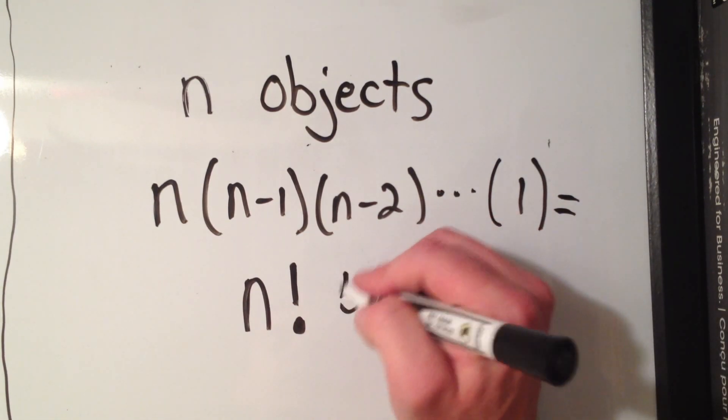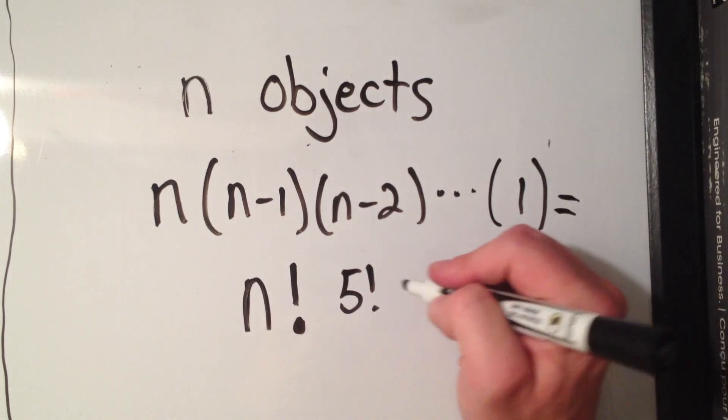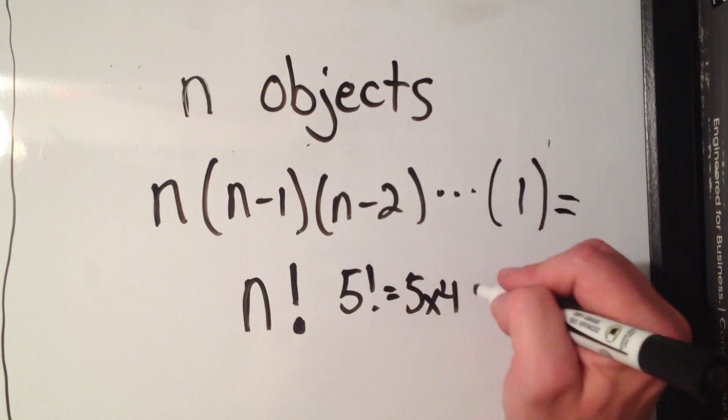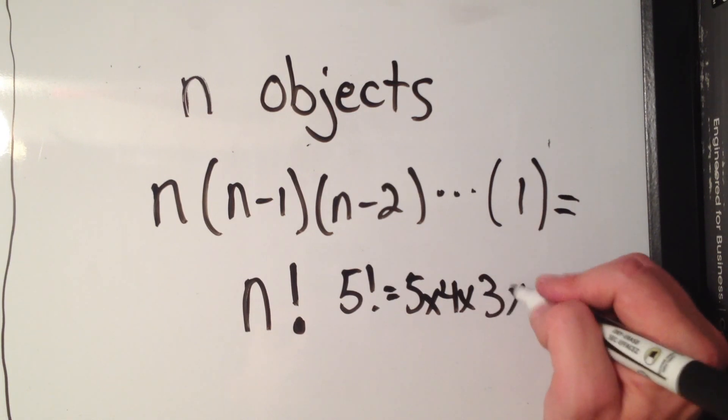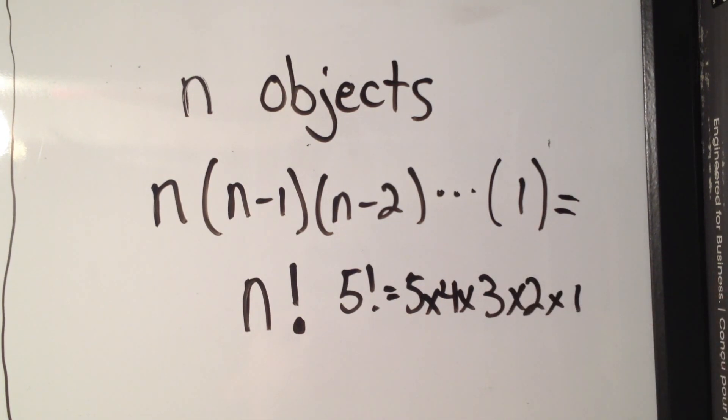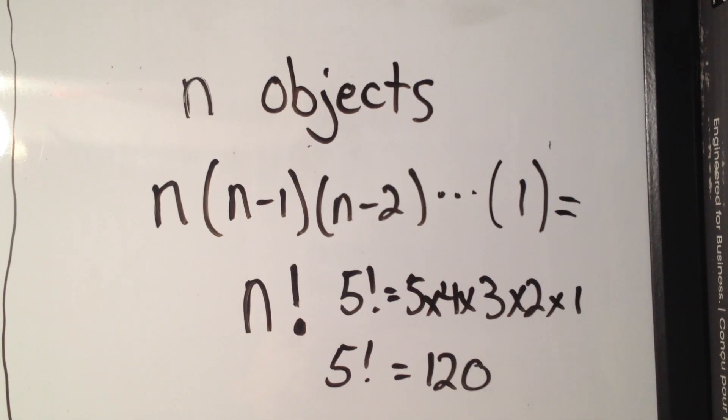So for instance, five factorial, that would be five times four times three times two times one. And I think five factorial is equal to 120.